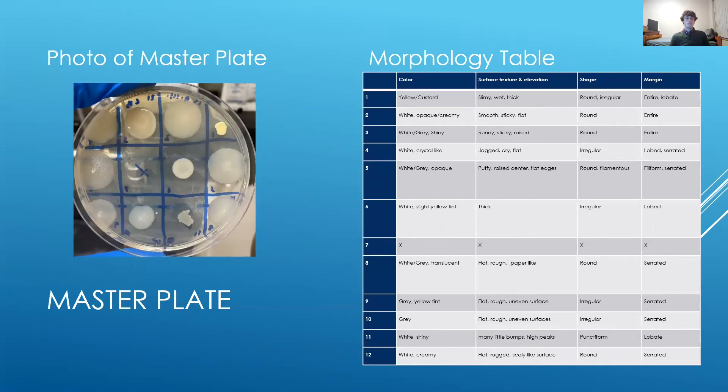After the spread plates were made, colonies were taken from these plates using the pick and patch method. This was a process where the bacteria was picked from the spread plate and patched onto a new agar plate that would become the master plate. This is a plate that will contain all our bacteria organized in one place that we refer to later.